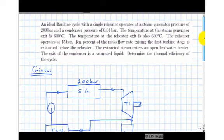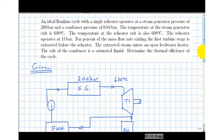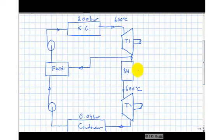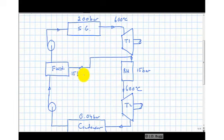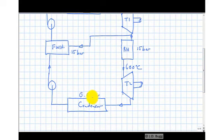We have 600 degrees C at the exit of the steam generator and also at the reheater exit. The reheater operates at 15 bar, meaning the feedwater heater is also at 15 bar. Everything from the discharge of pump two to the inlet of turbine one is at 200 bar, dropping to 15 bar through the first turbine, then down to 0.04 bar through the second turbine. Pump one brings it back up to 15 bar, and pump two to 200 bar.